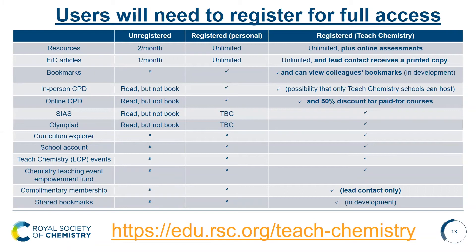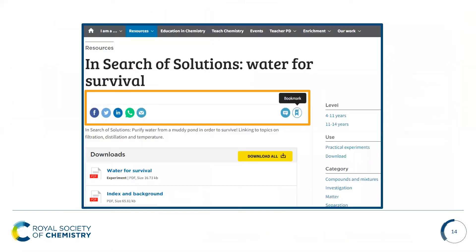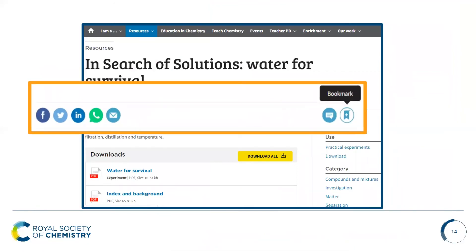You can register for a free account with your school or work email address. If you're unregistered you have access to two resources a month or one Education in Chemistry article a month. However, if you register via a Teach Chemistry account you get more access to different opportunities within the website. You're also able to bookmark resources, which means you can find resources and articles year after year — you can bookmark something you like even if you're not currently teaching that topic and save it for later.